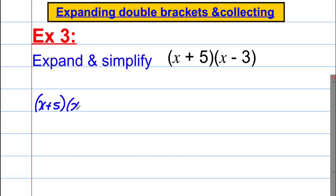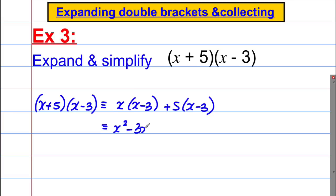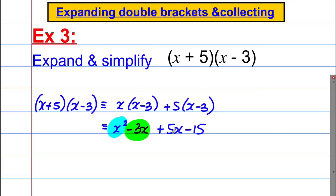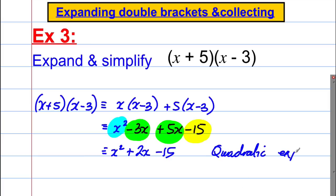Next: x add 5 multiplied by x subtract 3. Write as x multiplied by the second bracket, add 5 multiplied by the second bracket. Expanding: x squared, subtract 3x, add 5x, subtract 15. Positive times negative is negative. Collecting like terms: x squared, negative 3x add 5x gives positive 2x, so x squared add 2x subtract 15. Positive 5 times negative 3 gives the negative 15.